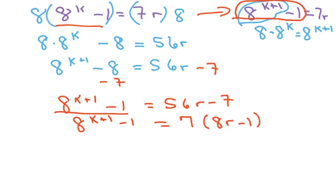Now, this is my t part, so I'm going to let t equals 8r minus 1. So I have 8 to the k plus 1 power minus 1 equals 7t.